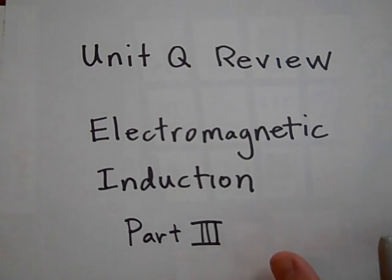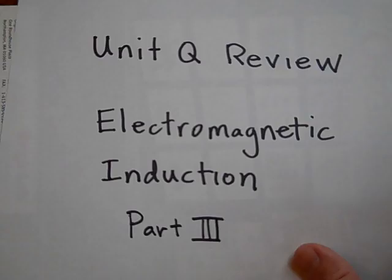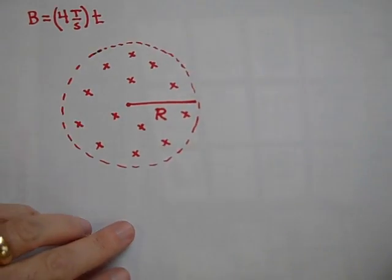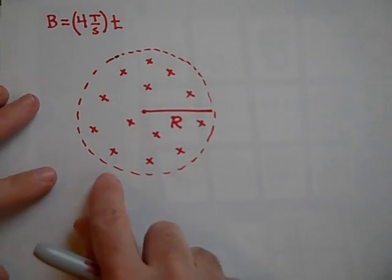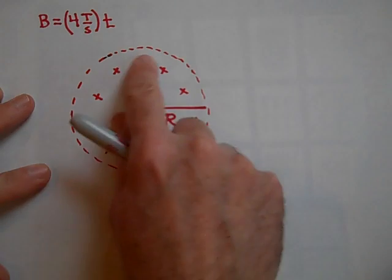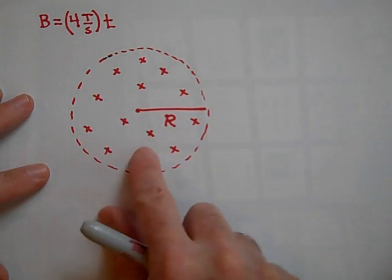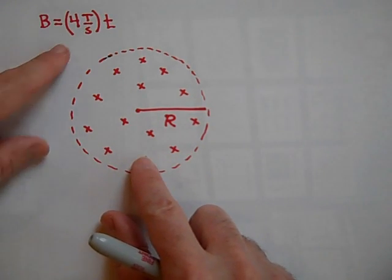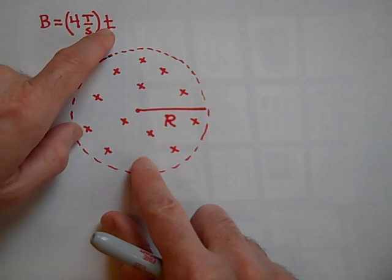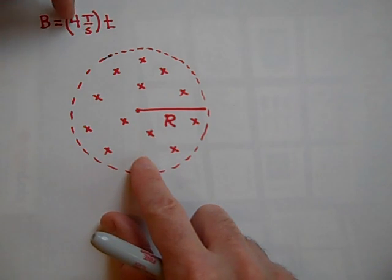Alright, here we are, part three of unit Q review. So now we have the circular region of space, just a circular region of space. It's got a uniform magnetic field, but it's not constant—it's changing with time. It's changing at a rate of 4 Teslas per second times t.